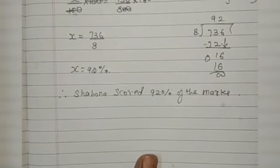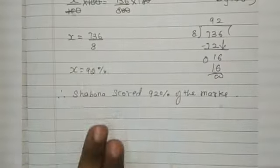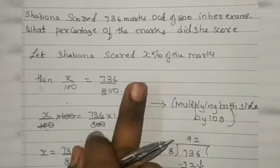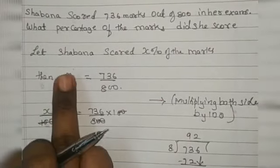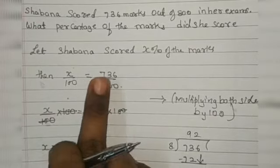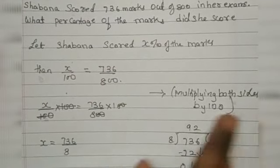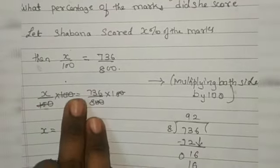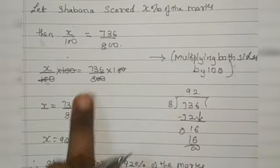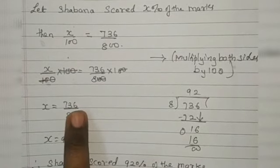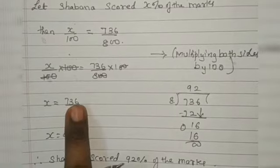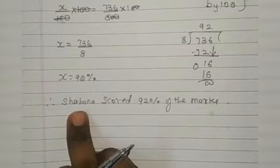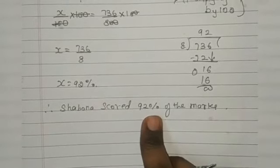To summarize the first question: we are given total marks and asked to find the percentage. We let x be the percentage, set up x/100 = 736/800, multiply both sides by 100, simplify to 736/8, and divide to get 92. So Sabna's percentage is 92%.